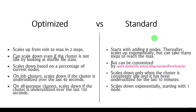Now let's understand the difference between optimized and standard auto scaling. In optimized auto scaling, Databricks can scale up the number of worker nodes from minimum to maximum in just two steps. For example, with a range of 8 to 64, Databricks can jump directly to 32 and then immediately reach the maximum of 64. This boosts performance significantly. In standard auto scaling, nodes are added exponentially, so even with a very complex workload, Databricks adds nodes gradually, which means some performance is lost.